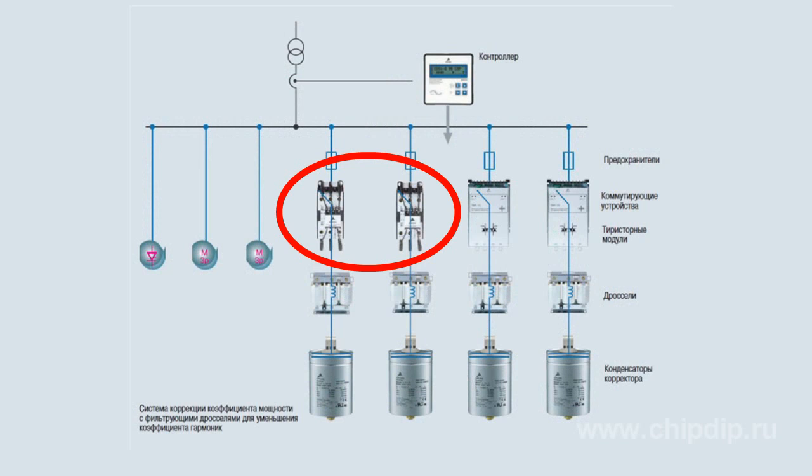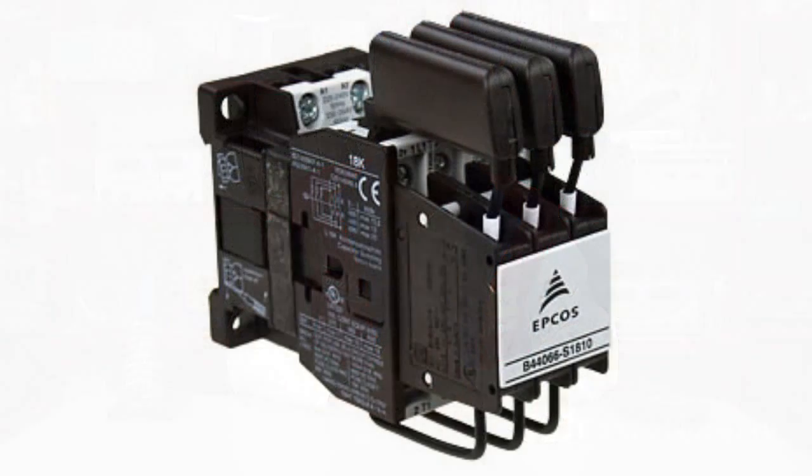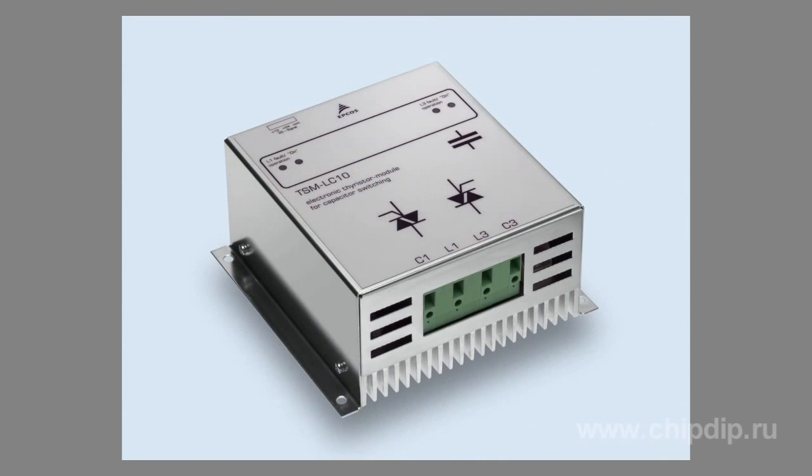An electromechanical or electronic switching device is used to switch capacitors in standard correction systems, or capacitors and throttles in staggered systems. In power circuits, switching is done with the help of mechanical contacts or through using semiconducting devices. Electronic switching is preferable, especially when quick switching is required in dynamic correction systems.